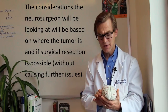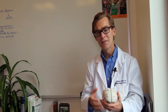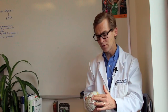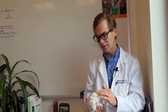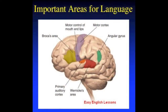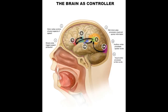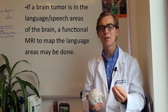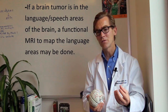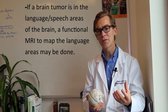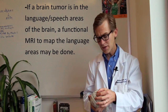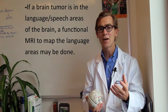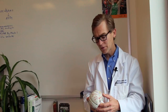I'd like to describe some of the considerations that a neurosurgeon will put into making these decisions. On this model of the brain, for a typical right-handed person, the language function is typically located in the frontal lobe on the left side and in the parietal and temporal lobe region on the left side. If someone has a tumor near one of these locations, it may be quite complex in terms of making a surgical resection, and sometimes we will use a pre-operative MRI called functional MRI to map out where the language areas of the brain are.